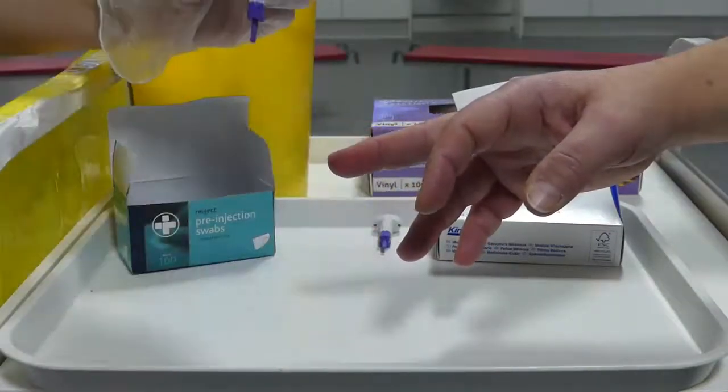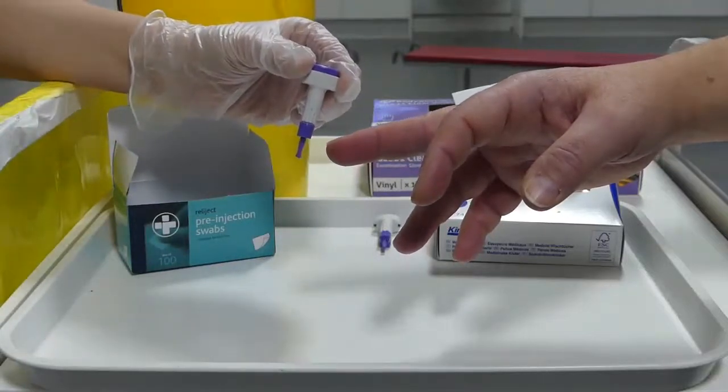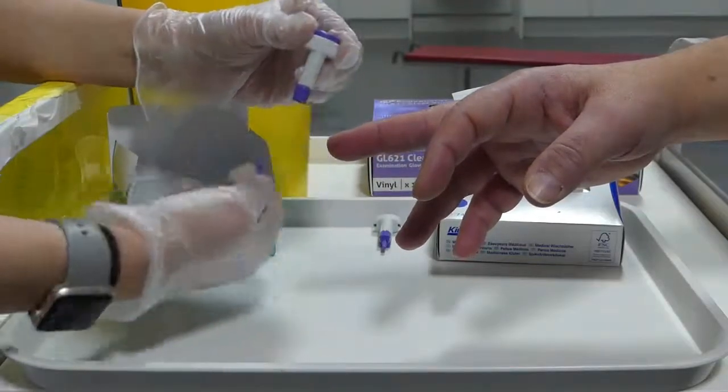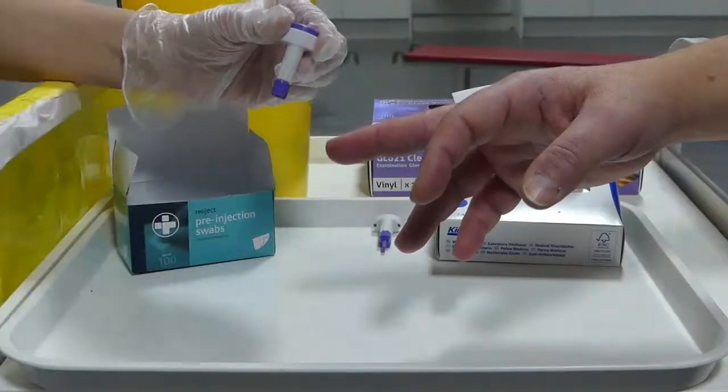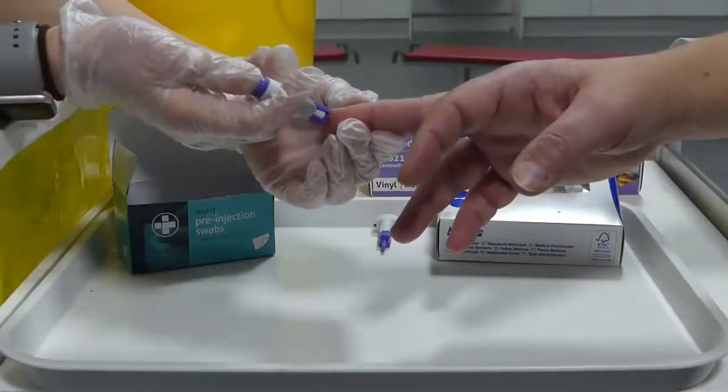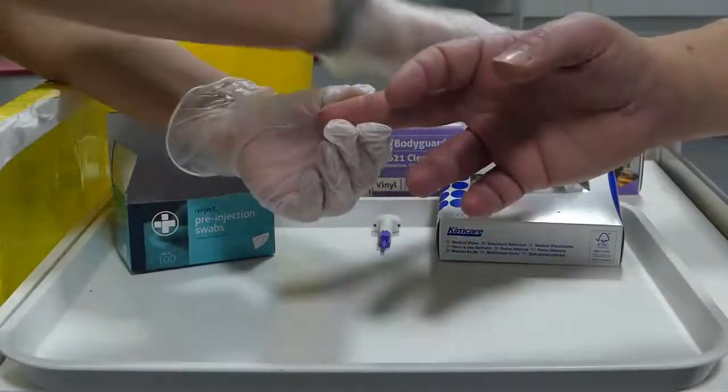Once clean, using the safety lancet we've just looked at, twist off the end purple sterile cap. Then you're going to hold the lancet, push gently into the fingertip, and we'll look at location in a moment. Then firmly press the button and you'll hear the safety lancet. Dispose of it immediately into the sharps bin.